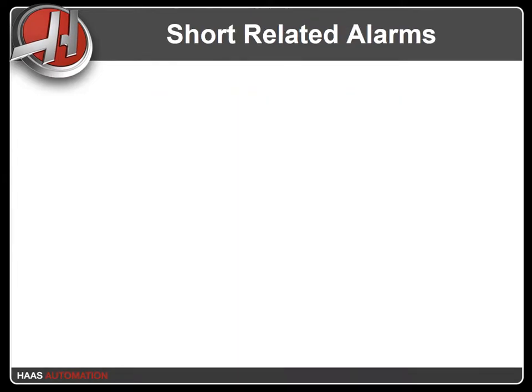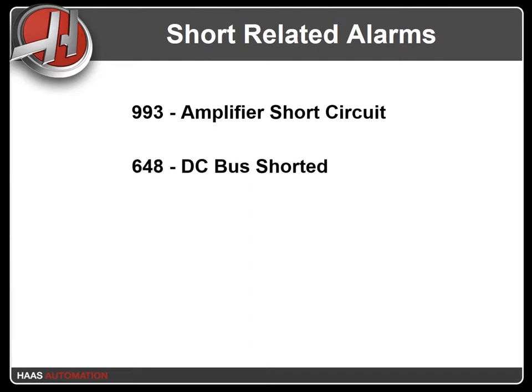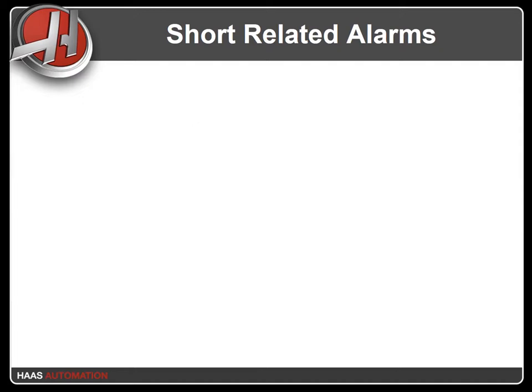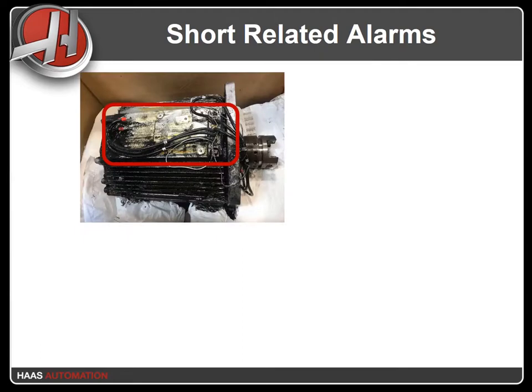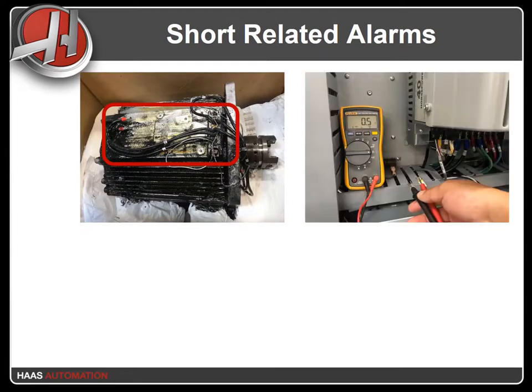Shorted cables, a shorted motor, or a coolant-contaminated motor can cause a short across the drive's outputs. A shorted regen load or shorted amplifier can also cause the drive to react. The drive protects itself during all of these conditions by generating any of the following alarms: Alarm 993 amplifier short circuit, Alarm 648 DC bus shorted, or Alarm 647 regen load shorted. When any of these alarms is displayed, the drive will stop all outputs to the spindle motor. The first thing to do for a short circuit related alarm is to inspect the motor and make sure that it's not shorted.